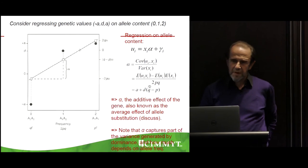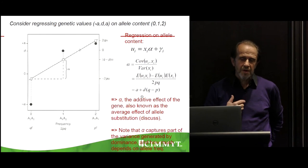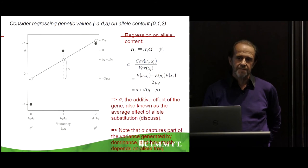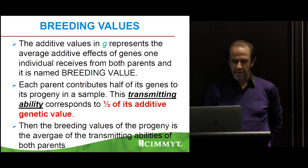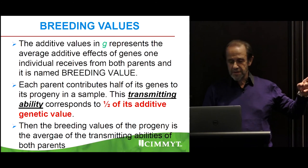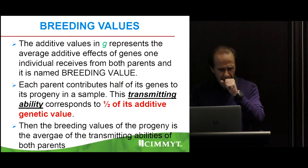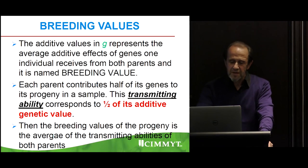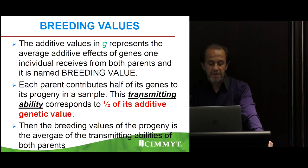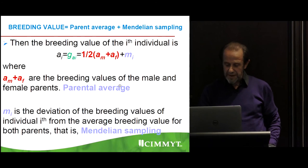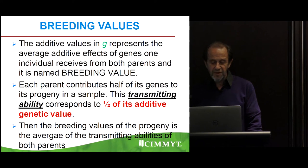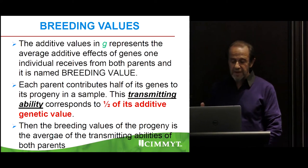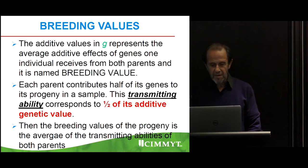The breeding value — the additive value G — represents the average additive effect of a gene. One individual receives genes from both parents, half and half, so each parent contributes half of the genes. This transmitting ability is one half of the additive genetic value.